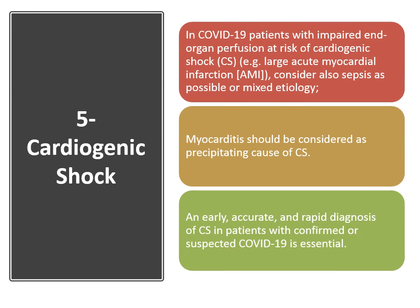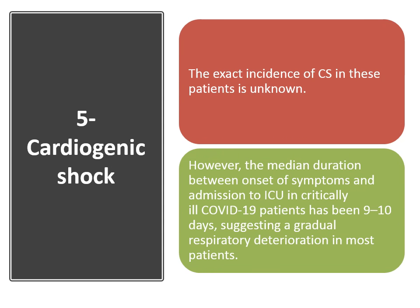The fifth clinical presentation is cardiogenic shock. In COVID-19 patients with impaired end-organ perfusion at risk of cardiogenic shock, such as large acute myocardial infarction, consider also sepsis as a possible or mixed etiology. Myocarditis should be considered as a precipitating factor for cardiogenic shock. An early, accurate, and rapid diagnosis of cardiogenic shock in patients with confirmed or suspected COVID-19 is very essential and crucial. The exact incidence of cardiogenic shock in these patients is unknown.